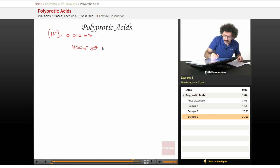HSO4- goes to H+ plus SO4²-. We have initial, change, and equilibrium. The initial concentration is 0.010. Strong acid dissociates into H+ and HSO4- in the first dissociation.